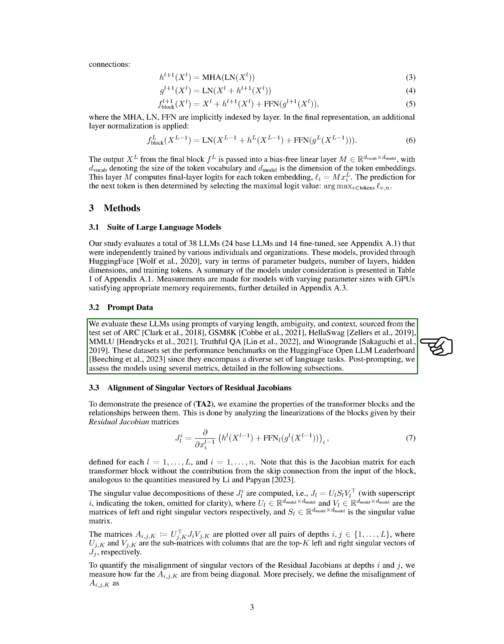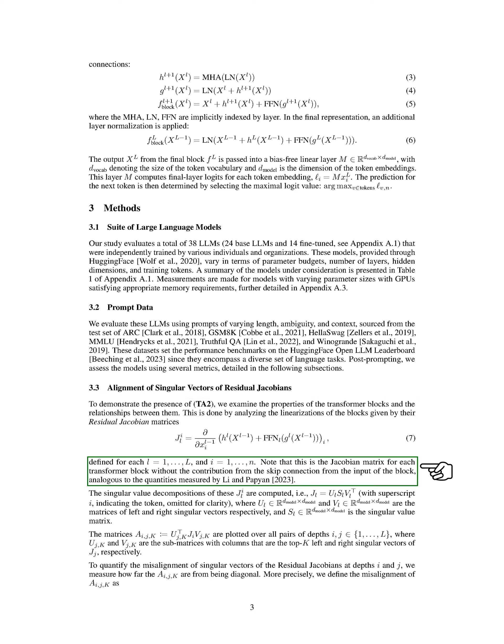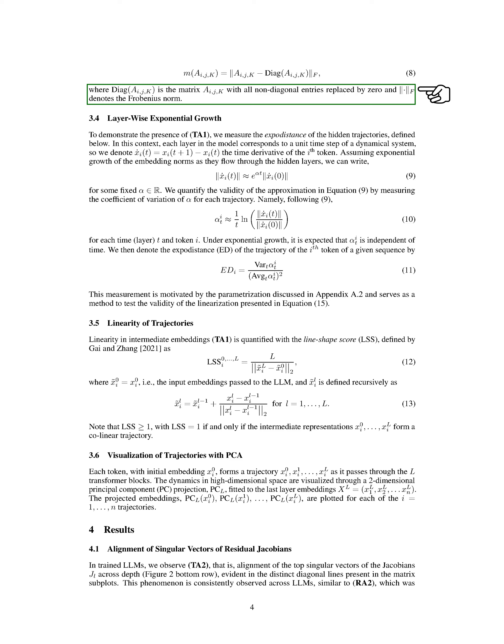After providing prompts, we evaluate the models using different metrics explained in the upcoming sections. To demonstrate the presence of certain characteristics, we analyze the transformer blocks and their interconnections. We achieve this by studying the linearizations of the blocks through their residual Jacobian matrices, which help us understand the behavior of each transformer block without considering the input-skip connection.